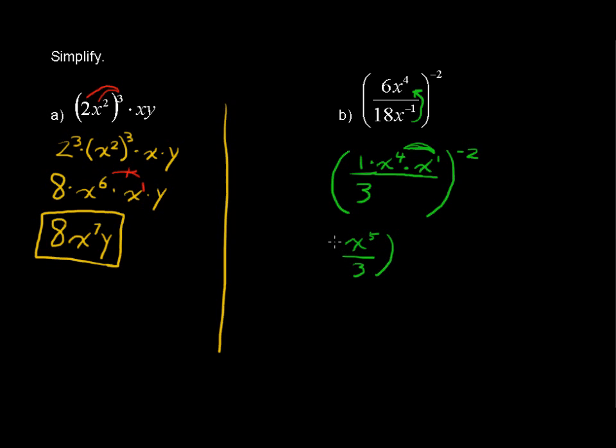Now when we have an entire fraction raised to a negative exponent, you can just flip that fraction upside down and make it a positive exponent. So let's do that. We have 3 over x to the 5th now raised to the positive 2.